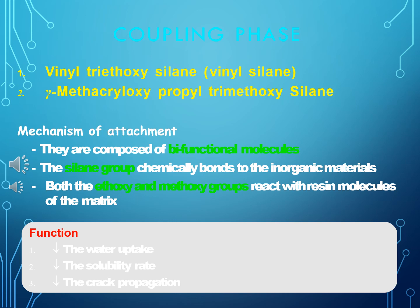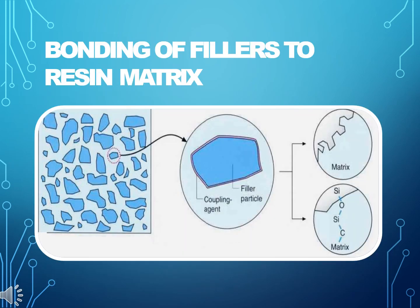The Coupling Phase uses silane coupling agents such as vinyl triethoxysilane, vinyl silane, and gamma-methacryloxypropyl-trimethoxysilane. These are bifunctional molecules: a silane group chemically bonds to the inorganic filler material, while ethoxy and methoxy groups react with resin molecules of the matrix. This functions to reduce water uptake, solubility rate, and crack propagation, thereby improving bonding of fillers to the resin matrix.